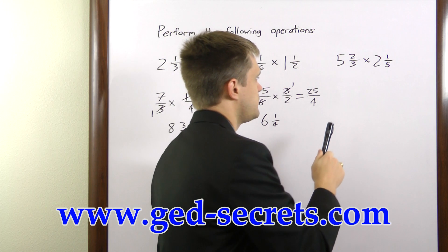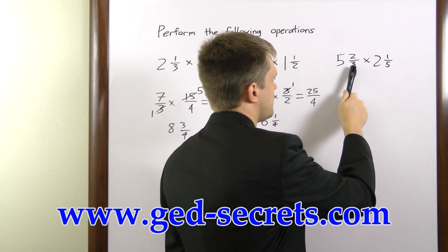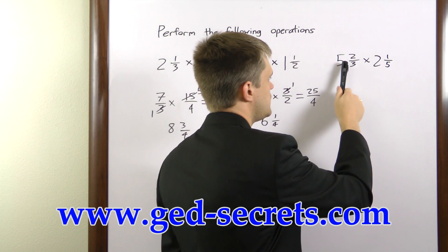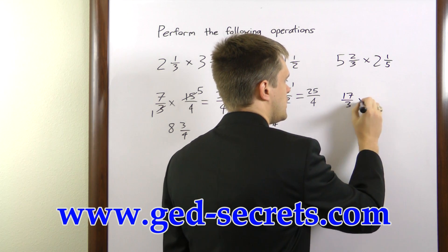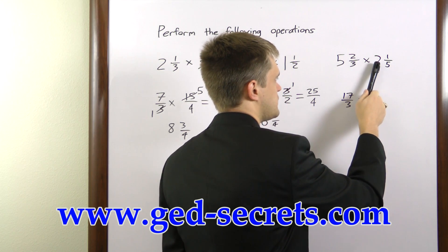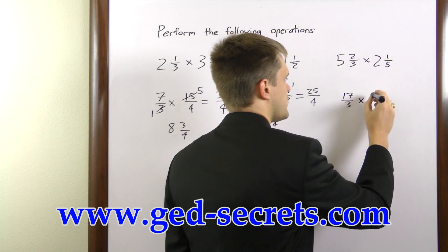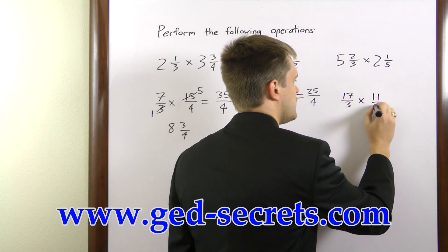The final example here, we have 3 times 5 is 15, plus 2 is 17. 17 over 3 times 5 times 2 is 10, plus 1 is 11. 11 over 5.